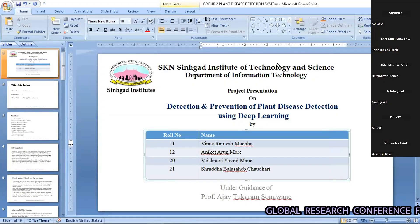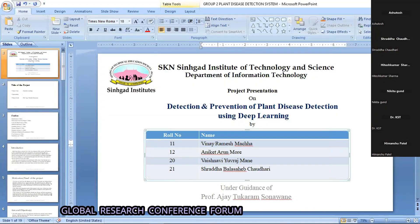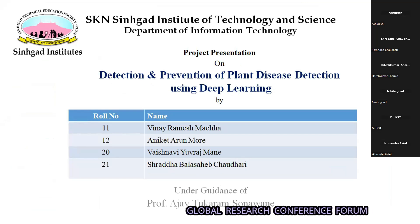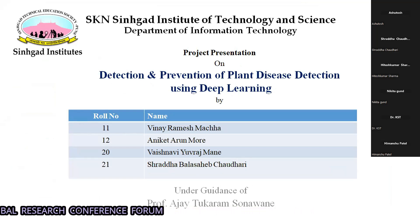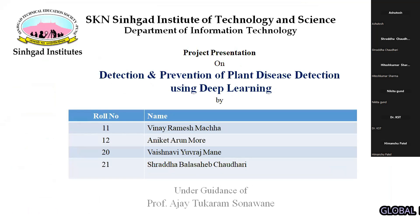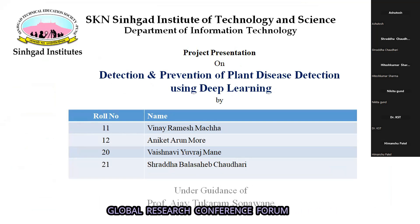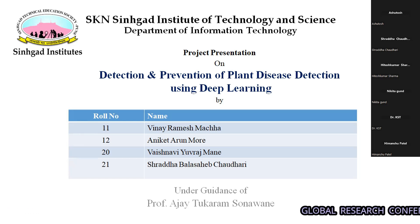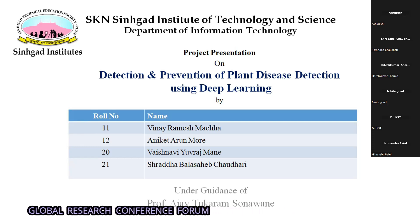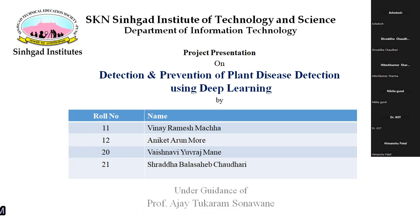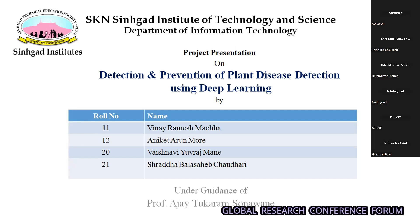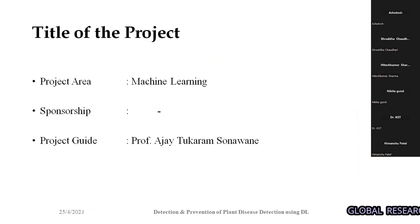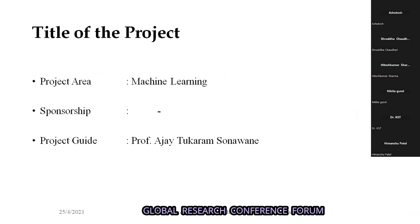Our project topic is detection and prevention of plant disease using deep learning. We are trying to detect plant diseases so a farmer can analyze what type of disease the plant has got and what preventive measures can be taken. My name is Vena Ramesh Macha, and these are my group members. This project is developed under the guidance of Professor Ajay Kataram. We are from SKNS. The title of the project is Detection and Prevention of Plant Disease, based on machine learning and deep learning.